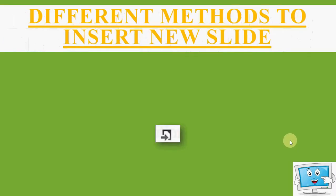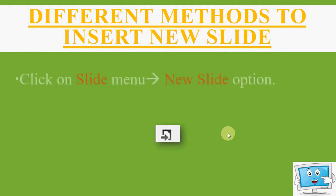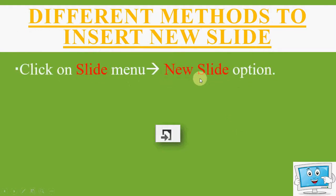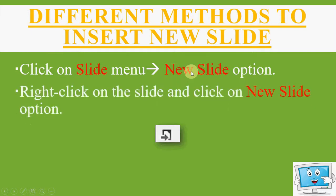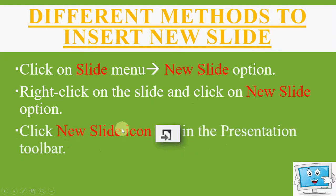Next we have the different methods to insert a new slide. First, click on the slide menu and click on the new slide option — from the menu bar, you have to click on the slide menu and from there choose the new slide option. The second method is to right click on the slide in the thumbnail form and click on the new slide option.